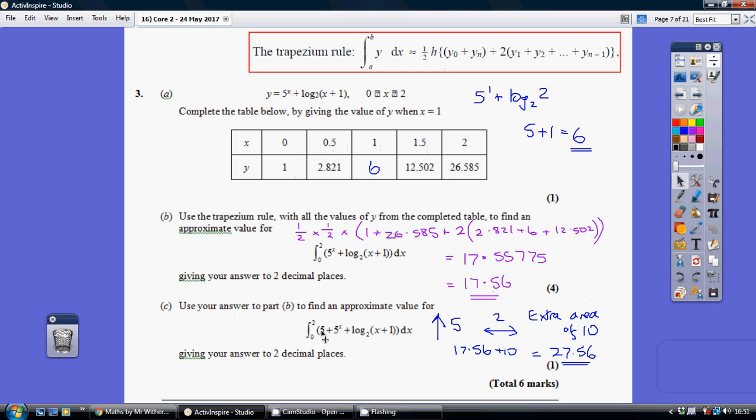So try and imagine as it shifts up, it's creating a rectangle underneath it, which has got a height of 5 and a width of 2. The values that we're covering are a width of 2. So if you've got a height of 5 and a width of 2, that's an extra area of 10. So we've got to add 10 onto our previous answer of 17.56 to give us our answer of 27.56.